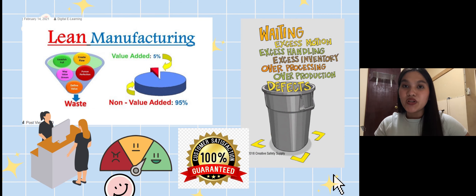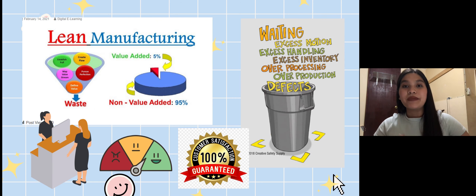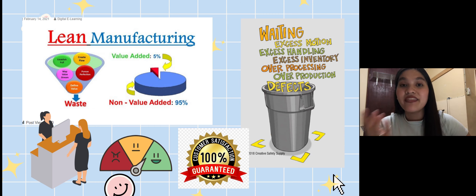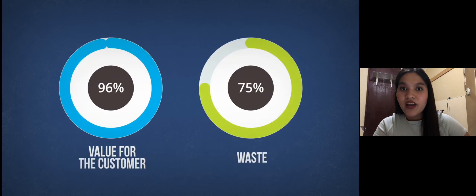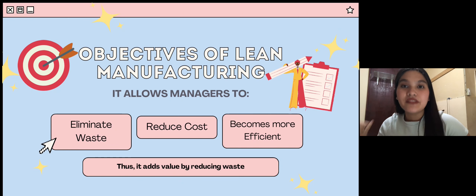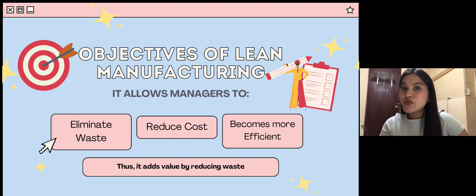Because lean methodologies are always customer-focused, people are the most important thing to consider. Eliminating waste with lean starts by identifying what is valuable to customers buying the product and putting all focus on those items. There are three objectives of lean manufacturing: the elimination of waste, reduce cost, and to be efficient.